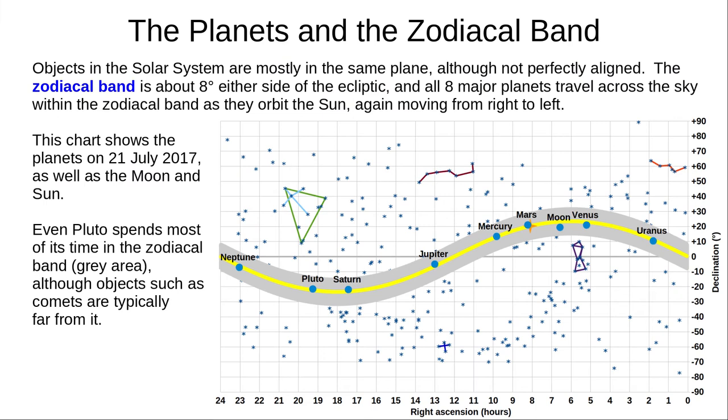Other objects in the solar system move roughly in the same plane, although not perfectly. The zodiacal band is a region shown here in grey, 8 degrees either side of the ecliptic. All 8 major planets move within this band, from right to left, as we and they orbit the Sun, as you can see here with locations from 21st July 2017. Even the dwarf planet Pluto spends most of its time in the zodiacal band. Only some small objects, like comets, deviate much from this region.